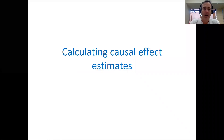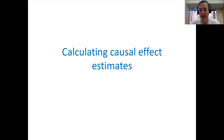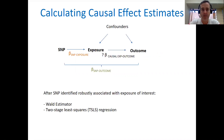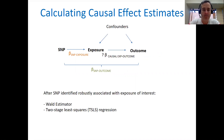So how do we go about calculating estimates of the causal effect using Mendelian randomization? Well, there are a number of ways in which we can do this. I'm going to be talking about two methods. One is called the Wald estimator or the Wald ratio, and the second is called two-stage least squares regression.